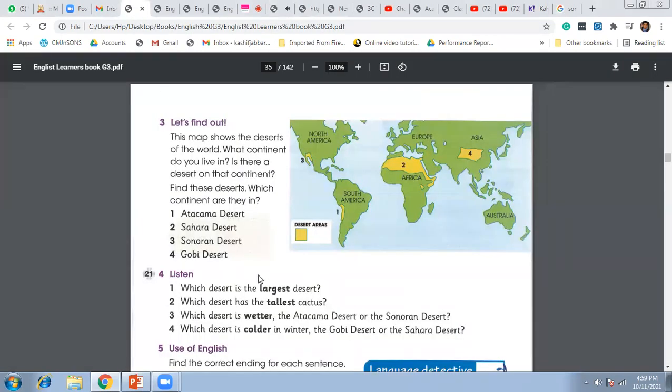The Atacama Desert is in South America. It is the driest place on Earth. It gets almost no rain, about one centimeter of rain each year. It is hot during the day and cold at night. Not many plants grow in the Atacama Desert.